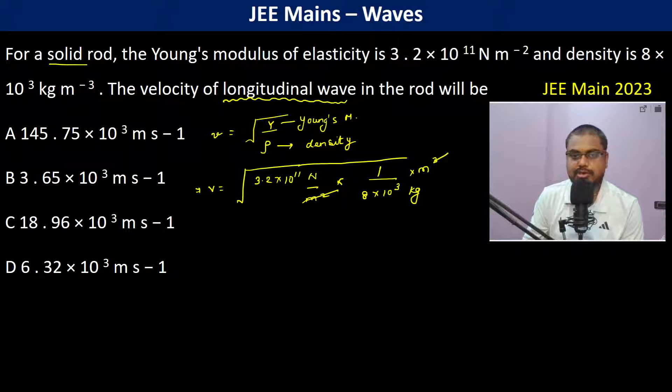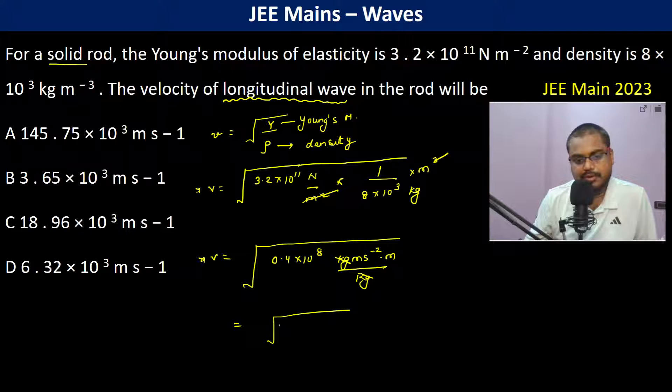Meter square is gone. So therefore V becomes 0.4 into 10 to the power 8 kg ms minus 2 into m divided by kg. Gone. So this is, we can see here, this is 40 into 10 to the power 6, meter square per second square, which is, now 10 to the power 6 is 10 to the power 3. And this is meter per second.